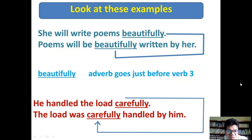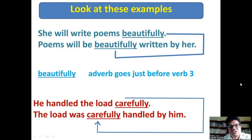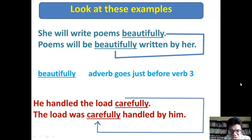'She will write poems beautifully' → 'Poems will be beautifully written by her.' Note that the adverb 'beautifully' moves with the structure. When transforming from active to passive, sentences may contain adverbs, clauses, or phrases — you must arrange them so the sentence reads naturally. For example: 'He handled the load carefully' → 'The load was carefully handled by him.'